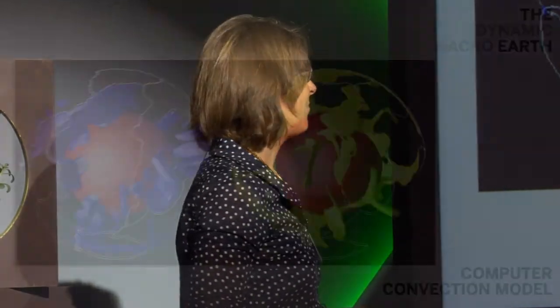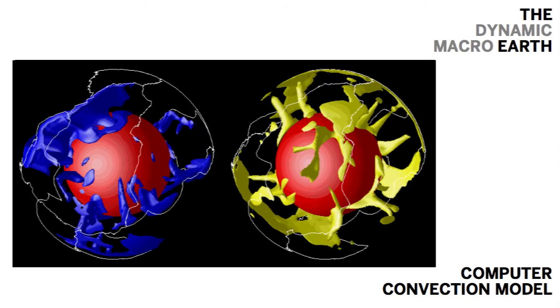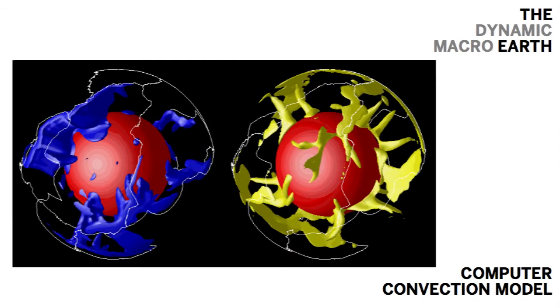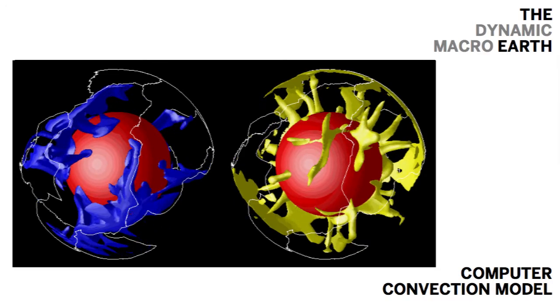When we combine what we learn in the laboratory about the dynamic behavior of materials with what we can measure about the Earth's dynamic interior, we can put together models of what is actually — on a very slow time scale — a convecting, moving planetary interior. This is a computer convection model showing three-dimensional flow, just like a pot of split pea soup on your stovetop being heated from below and mixing all around.